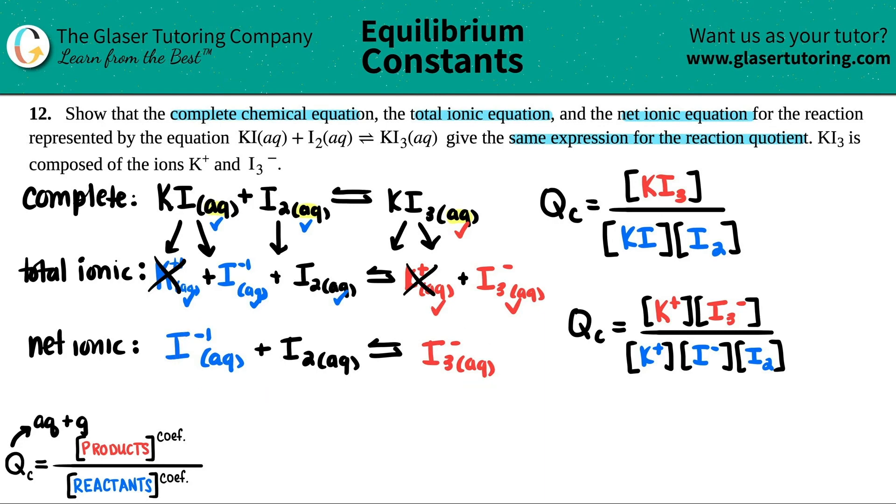And now I just have to write the Q value for this. So I'll write this one at the third one on the bottom. Products over reactants. So now I just have one product. So I have I3 minus divided by the I minus one times by the I2. And if you can see here, it's literally the... So hold on, let me just finish this. Because sometimes I can talk while I'm writing, but sometimes I can't.